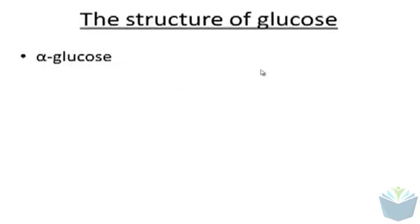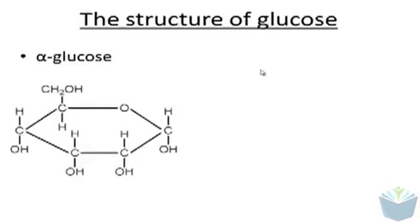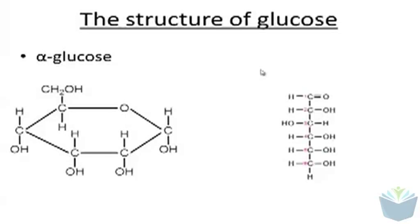Probably the most common monosaccharide you might come across is glucose, and specifically alpha glucose. There is another type, beta glucose, but that is not required for the NXL unit — alpha glucose is. You can see a typical diagram showing alpha glucose, and it can also be represented in another form. Like many monosaccharides and disaccharides, it ends in the letters OSE, which we associate with the word sugar. In the right-hand diagram, the carbons are numbered: carbon one, two, three, four, five, and six.